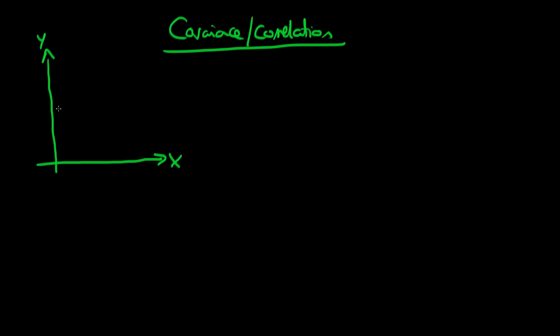Perhaps we get some sort of realizations which look something like this. The way I've drawn it, I've tried to indicate that there is some sort of positive relationship between X and Y. By positive, I mean that as X increases, Y tends to increase as well. We would like a way mathematically to represent this relationship.